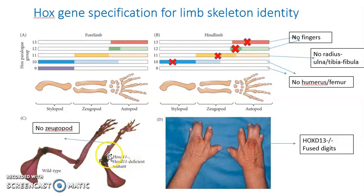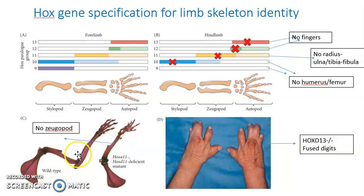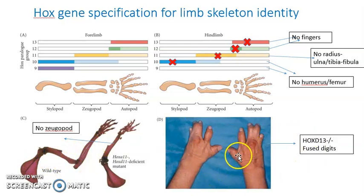This experiment shows that Hox 11 mutation has resulted in loss of the zeugopod in the forelimb, while the wild-type Hox 11 gene produces a normal phenotype. In humans, the HoxD13 homozygous mutation results in fused digits.